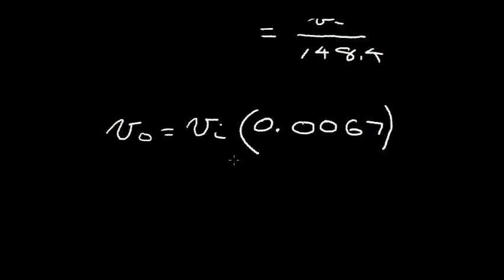So we are almost at zero volts — not quite there. If this factor were 1, we would be within 1%. Since 0.0067 is smaller than 0.01, we are within less than 1% of the final value at five time constants.